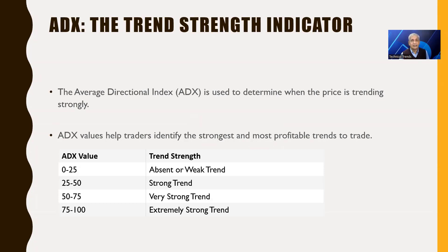If the ADX is not trending, then the next step for it will be to trend — and that's where we want to catch the move. Once the stock starts trending, once the index starts trending, we want to enter that trade. There are some ADX values: between 25 to 50 there is a strong trend, 50 to 75 there's a very strong trend, and so on.